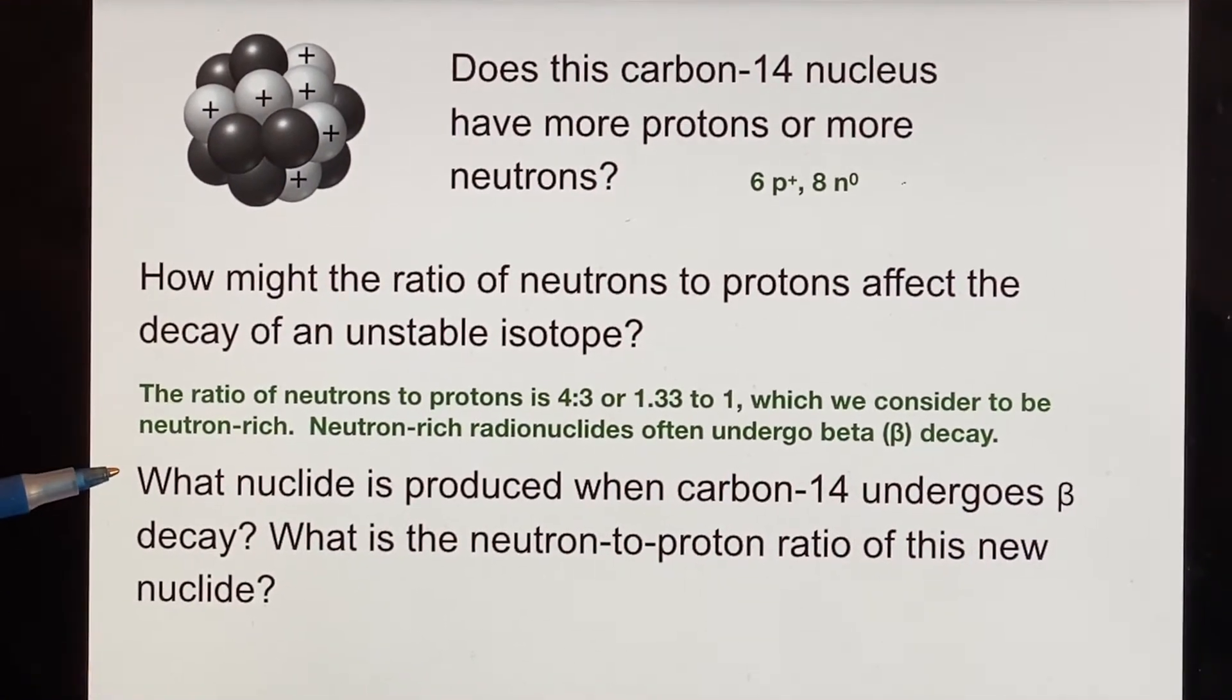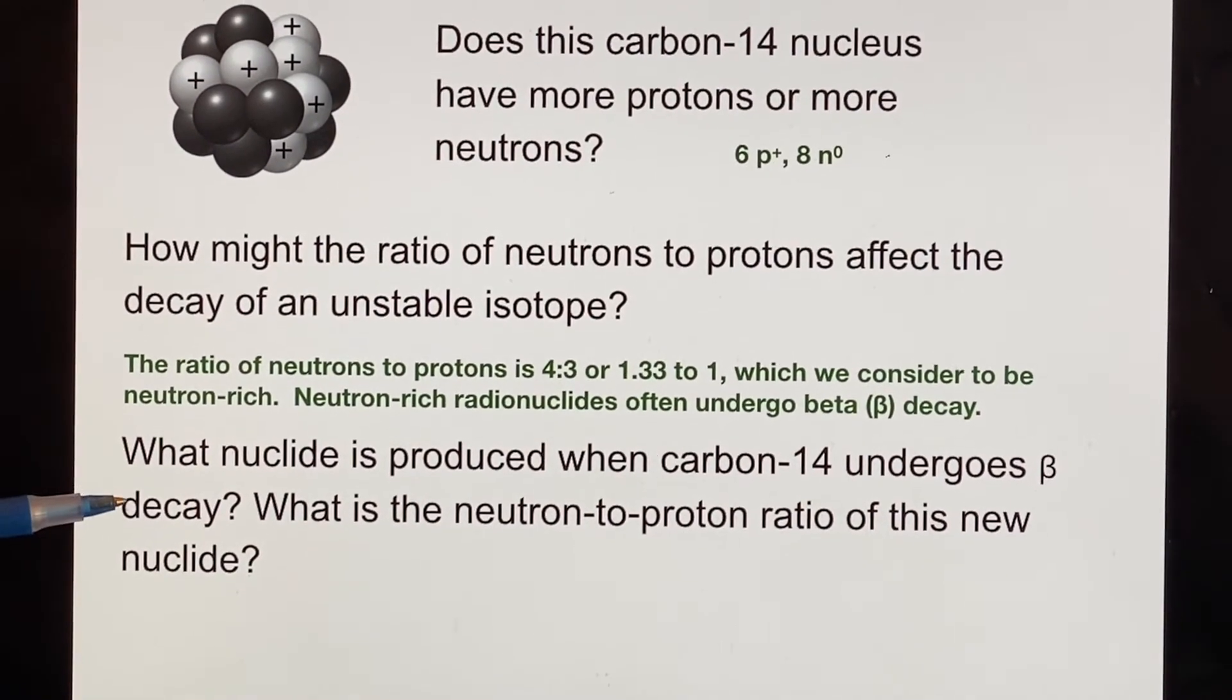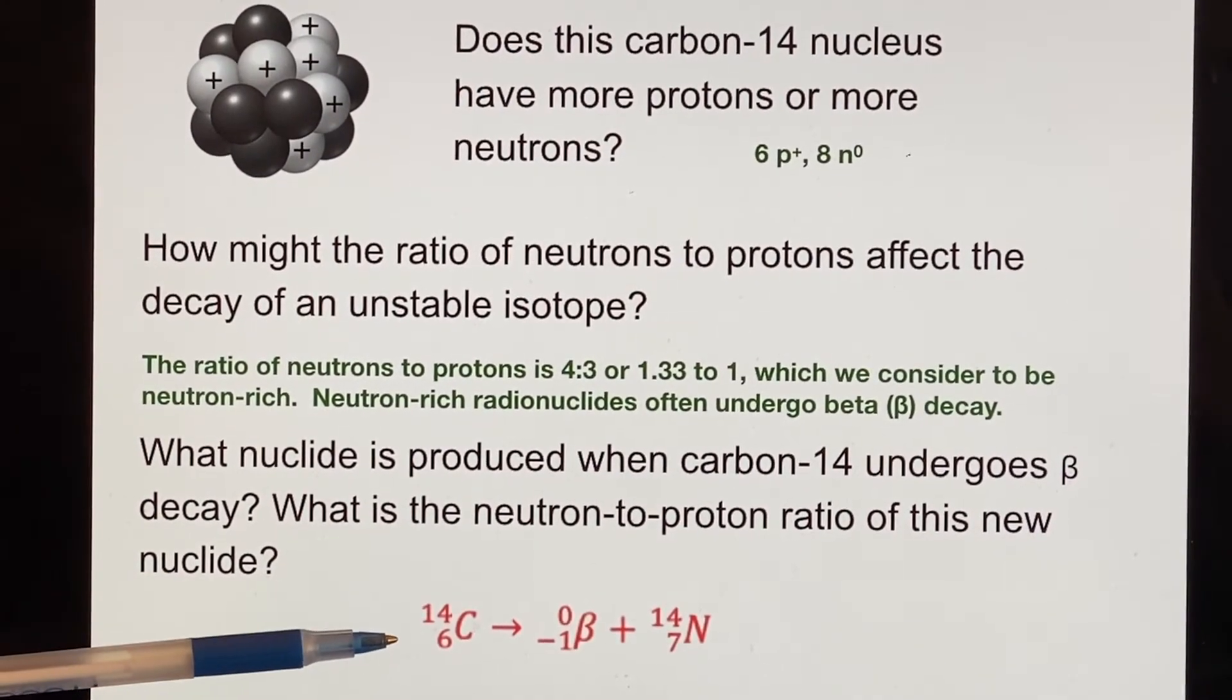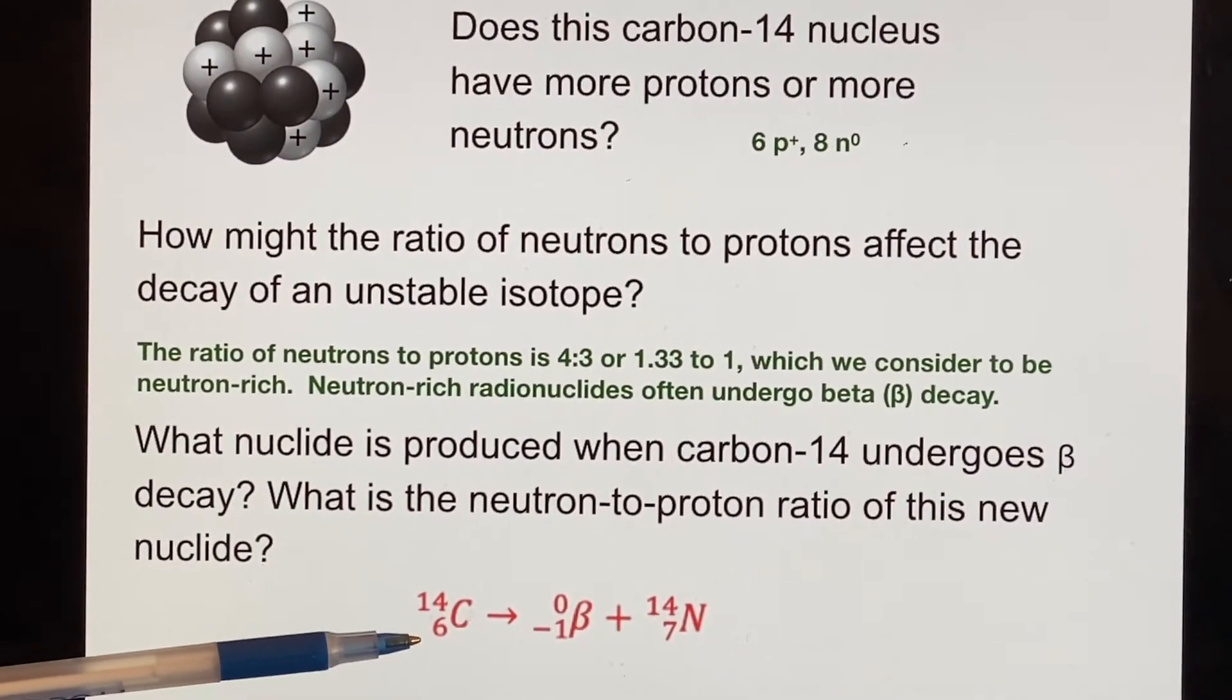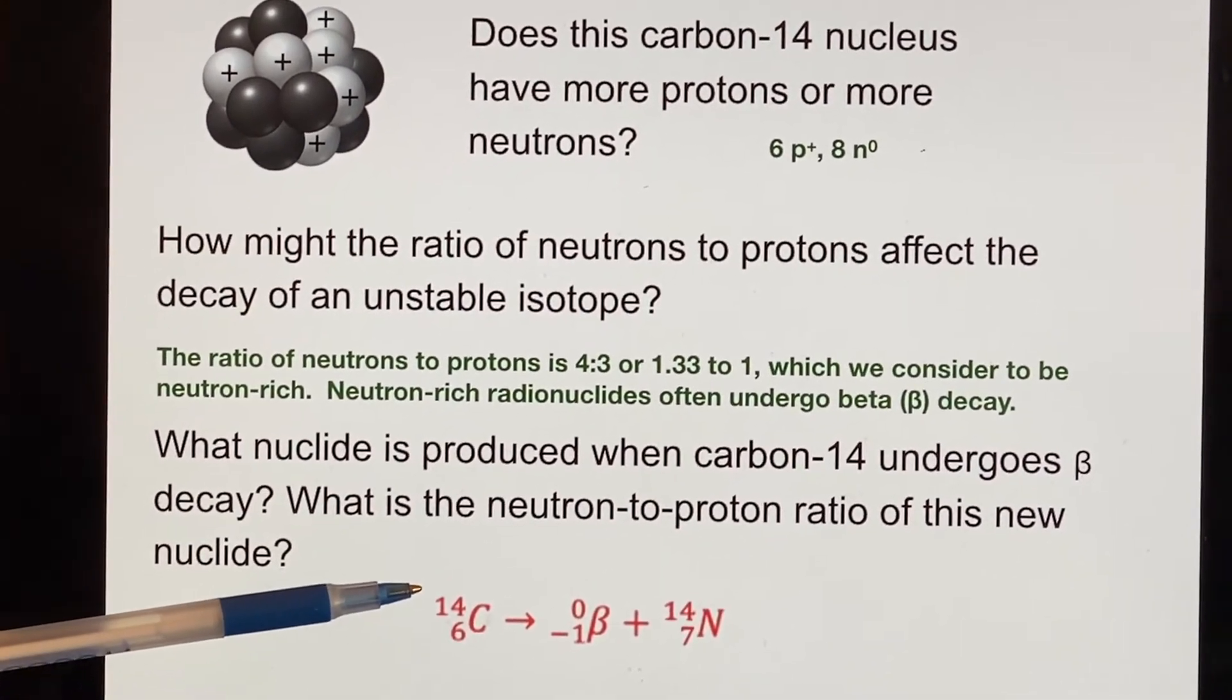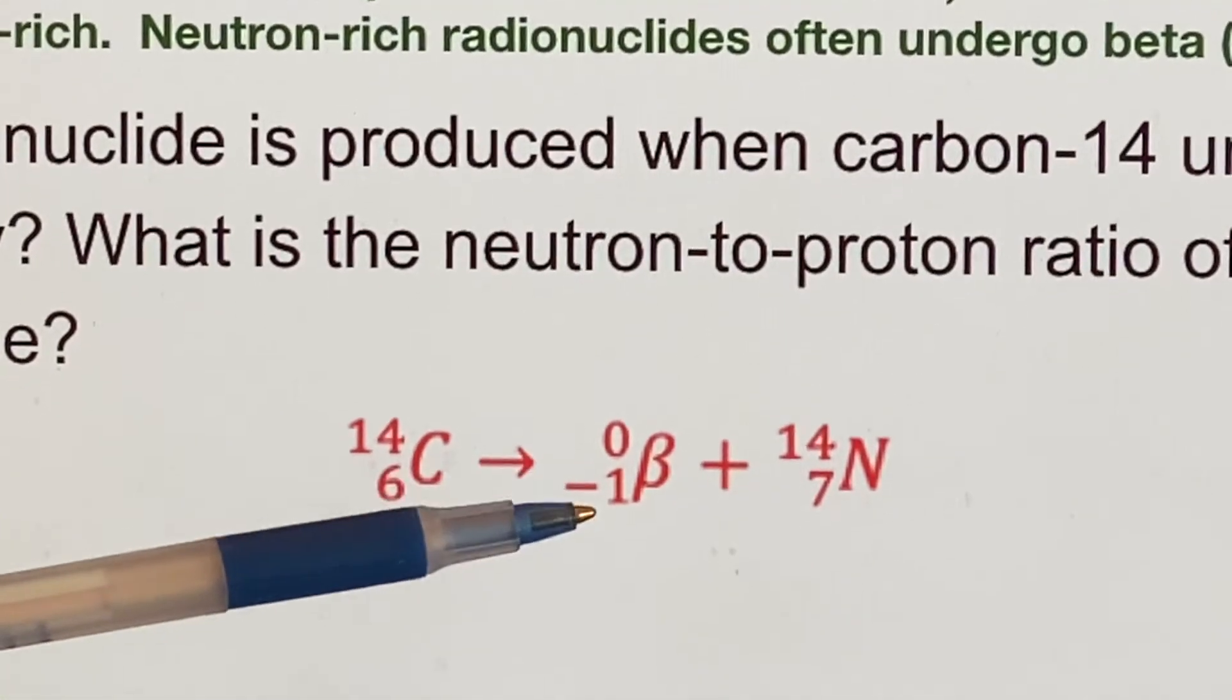So what is going to be the product if it undergoes beta decay? And then what is the neutron to proton ratio of the new one? Here is a formula for it. Carbon, which is element six. So that's your number of protons. And its mass is 14. So that's protons and neutrons added together. And then they told us it was going to be a beta decay.